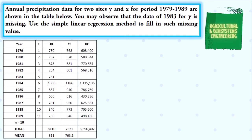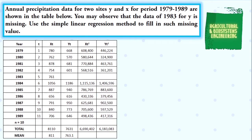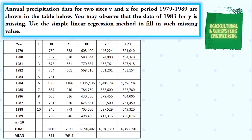Next, we get the square of the values for data X, then get the total. The same thing with data Y — we get the square of the values, then get the total. After that, we multiply the data for X and Y, then get the total.